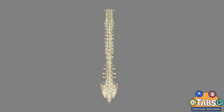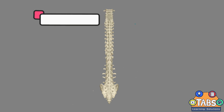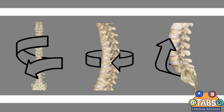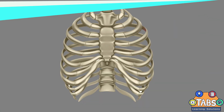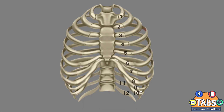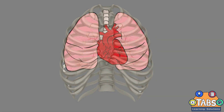The spine helps protect the spinal cord and is connected by joints, thus enabling the body to twist, rotate, and bend. The rib cage is composed of 12 pairs of ribs that protect the heart and lungs.